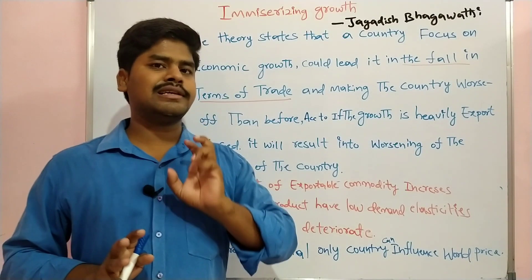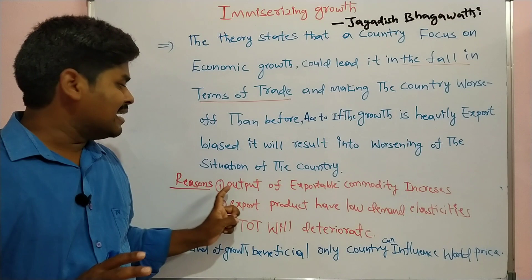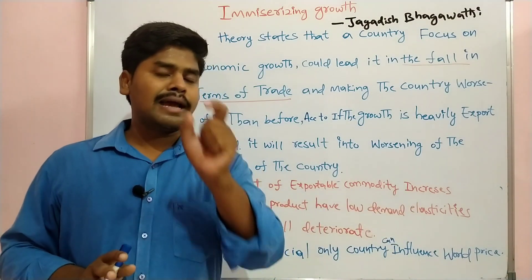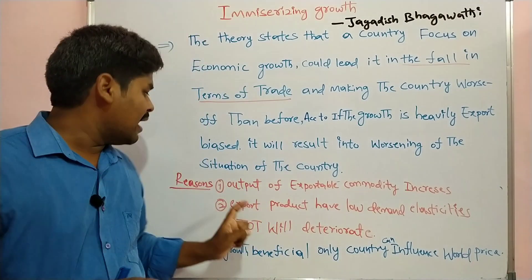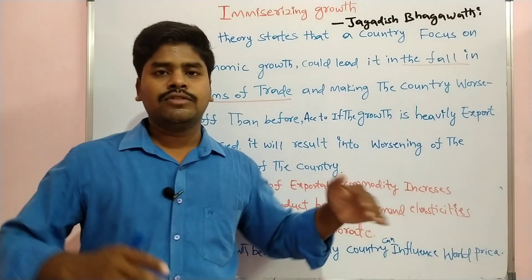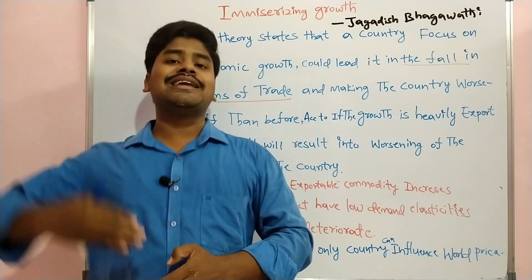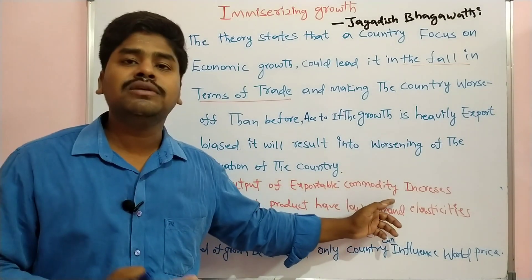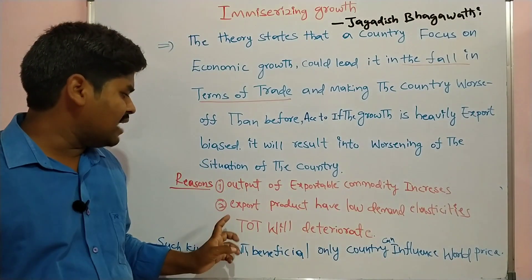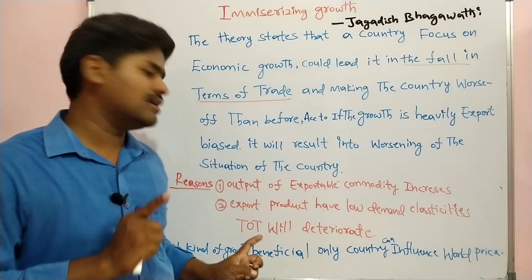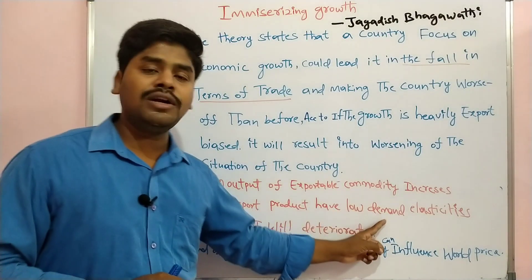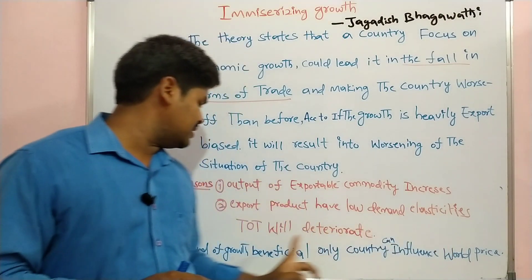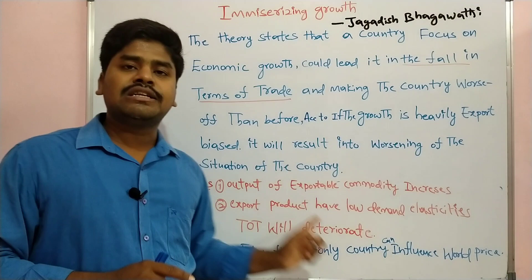The major two reasons for immiserizing growth are: first, the output of exportable commodities increases, leading to massive exports to the rest of the world. Second, export products have low demand elasticities, so the terms of trade will deteriorate.